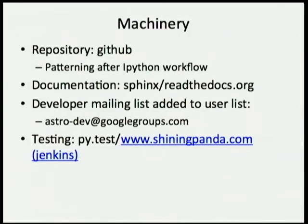So I'm going to talk briefly about what machinery lies behind all this. It's using GitHub, and we basically copy the Python workflow for dealing with source code. The documentation is Sphinx-based, and we're using Read the Docs to automatically build documentation — all versions for every release will be available, plus a developer version. There's a developer mailing list that's been added. We're using PyTest for testing and ShiningPanda as an automatic build and test facility for continuous integration.